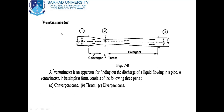A Venturimeter is an apparatus for finding out the discharge of a liquid flowing in a pipe. A Venturimeter in its simplest form consists of the following three parts: the first part is known as the convergent cone, the second one is the throat, and the third one is the divergent cone.